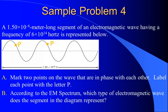Now for part B, it says, according to the electromagnetic spectrum, which type of electromagnetic wave does the segment in the diagram represent? And just like we did before, we can look at the frequency or the wavelength up here, look that up on our electromagnetic spectrum, and find that 6 times 10 to the 14 hertz corresponds to green light.